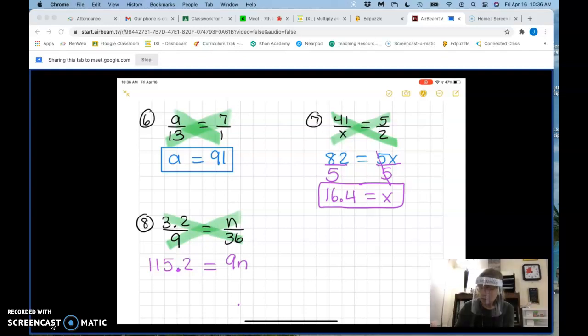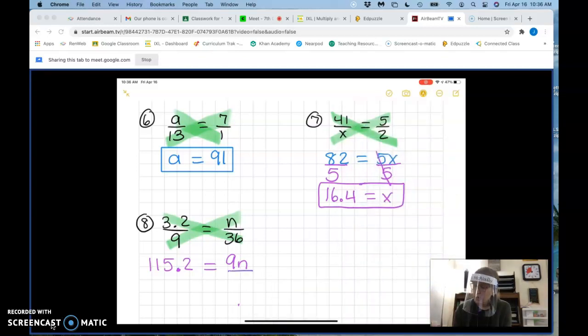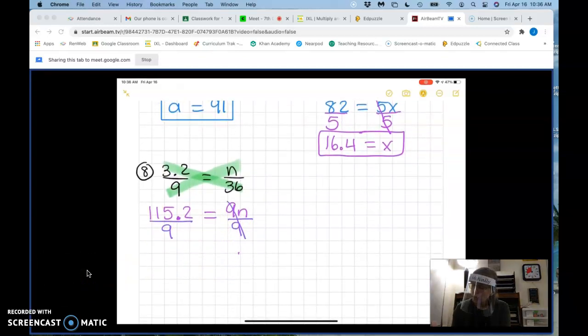And what do I do now to get n alone? You do the line and then you put nine at the bottom. Yes, excellent. I divide by nine and whatever I do to one side have to do the other. What happens to these two nines? They get crossed out. Yes, they cancel each other out.